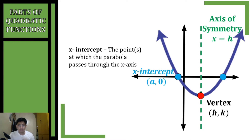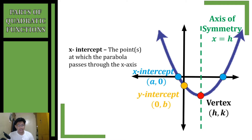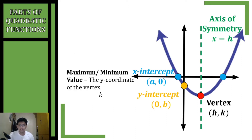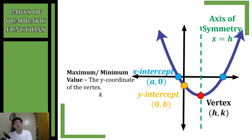The x-intercepts are the points at which the parabola passes through the x-axis. The y-intercept is the point at which the parabola passes through the y-axis. The maximum or minimum value is the y-coordinate of the vertex — it is the vertical limit of our parabola, indicating how high or how low the parabola reaches.